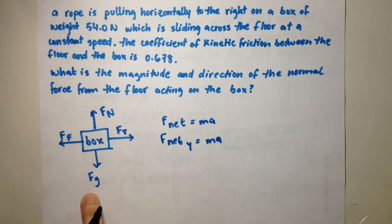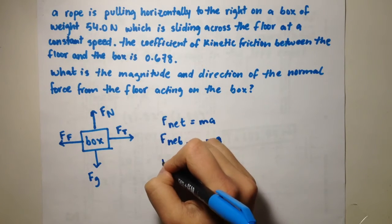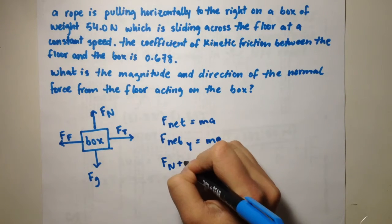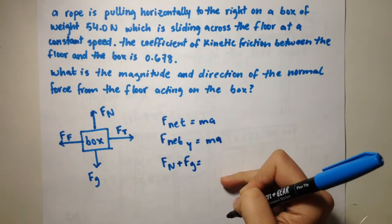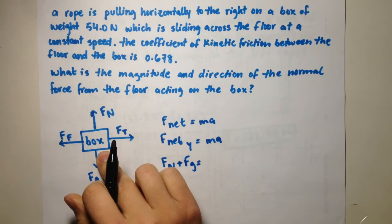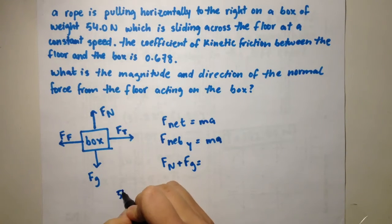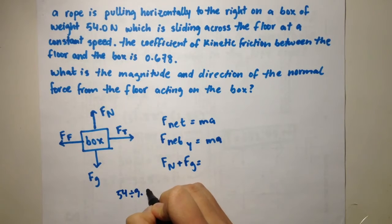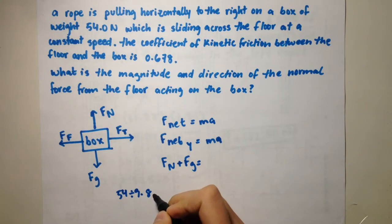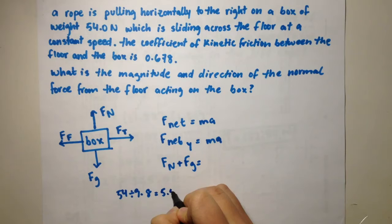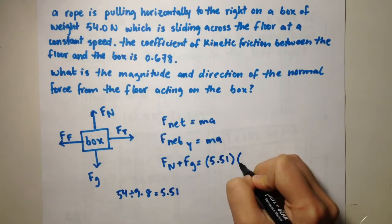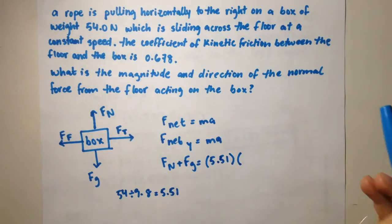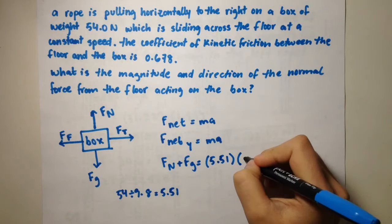In the Y direction, the normal force plus the force due to gravity must equal mass times acceleration. The mass of the box is the weight divided by 9.8, so 54 divided by 9.8 equals 5.51 kg. And the acceleration — it says constant speed, so when velocity is constant, acceleration is always zero.